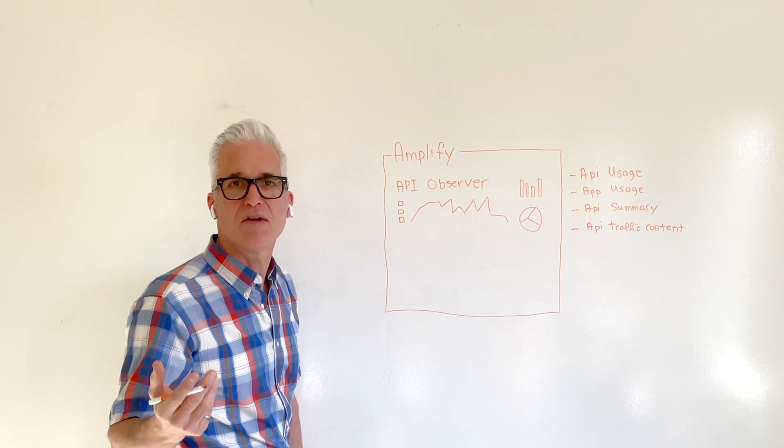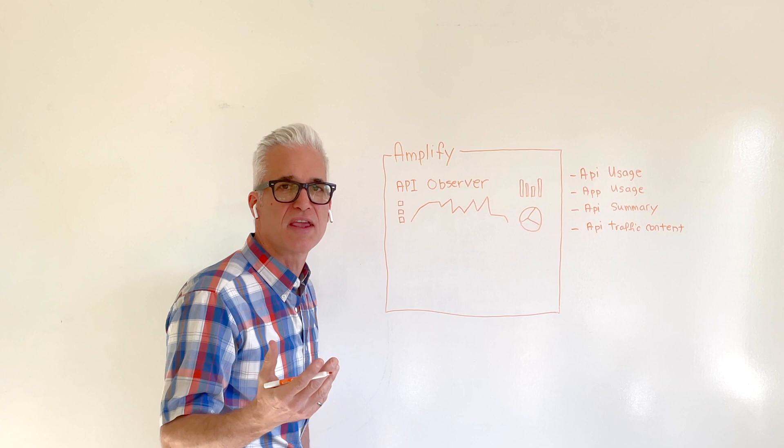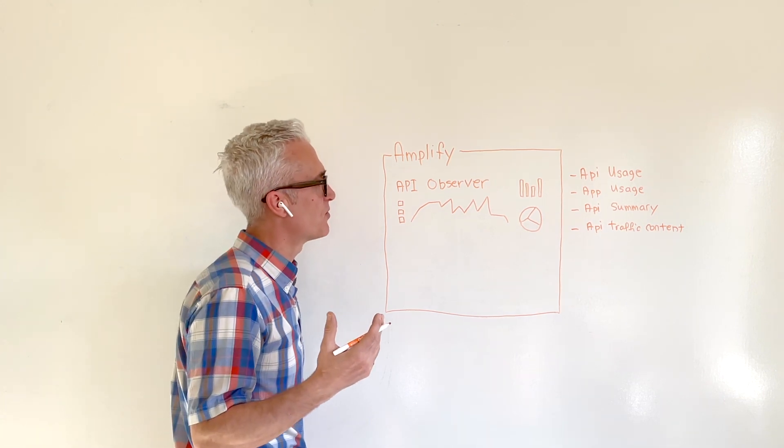You will get API summaries that you can filter on name, on method, on environment, status, as well as API traffic content, which can even show you things like headers if you configure it in such a way.